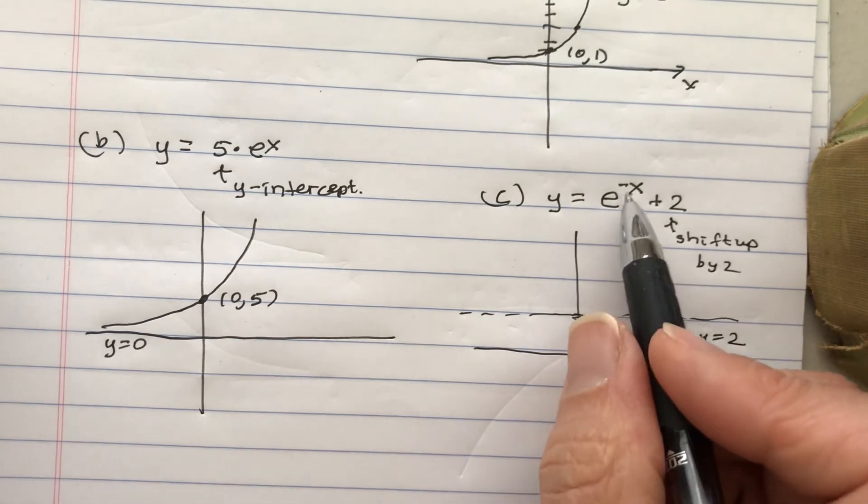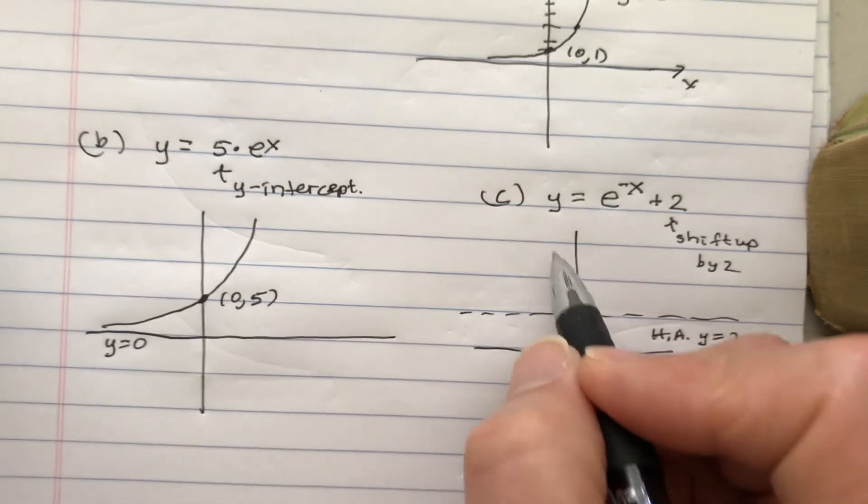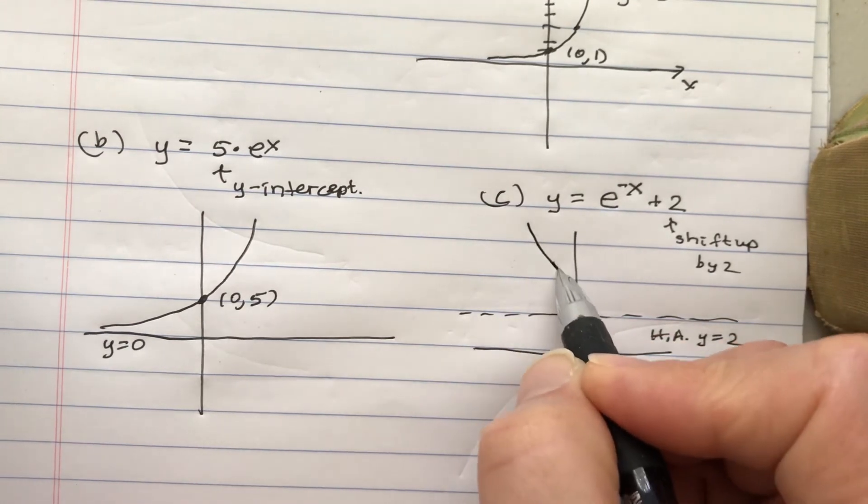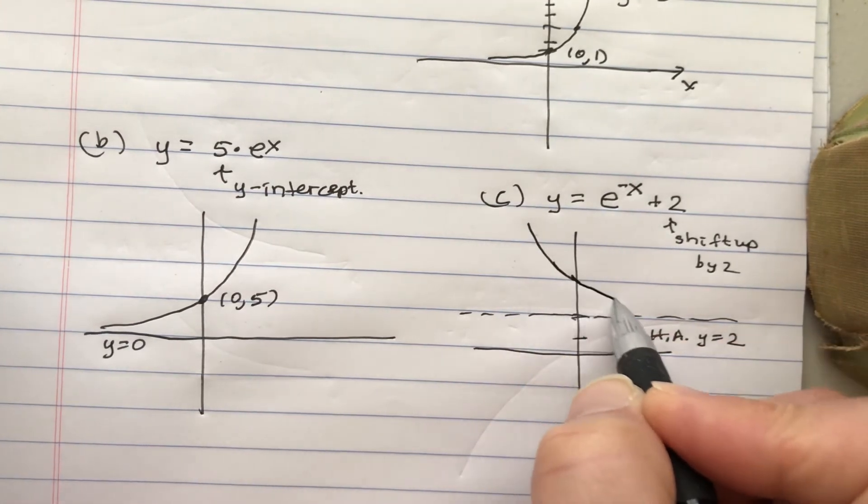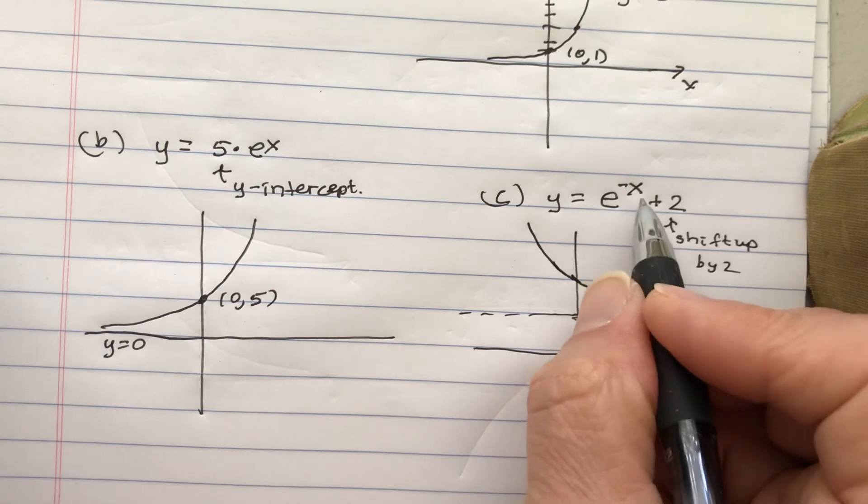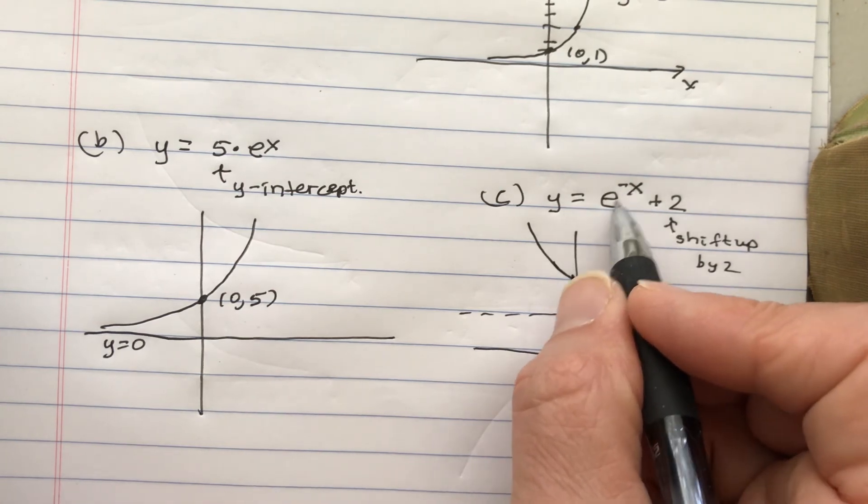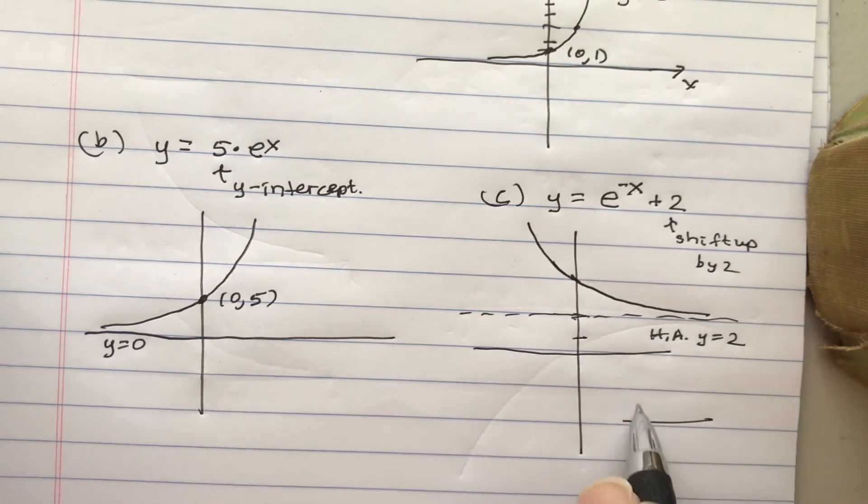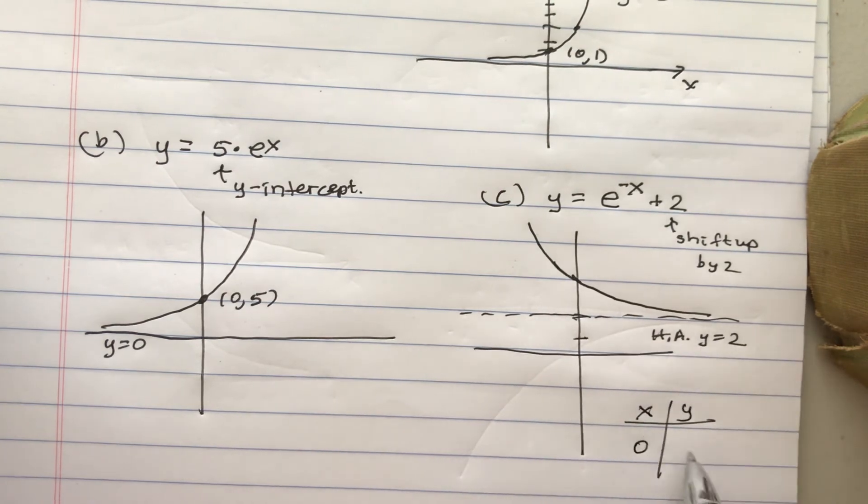Now what about this e to the negative x? Well, you can refer to 2 to the minus x. That is going to make it go down like this. And so you can plot points, put in especially 0. So just put in 0 and we get e to the negative 0 plus 2 makes 1 plus 2 which makes 3.